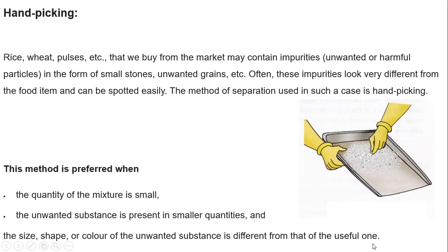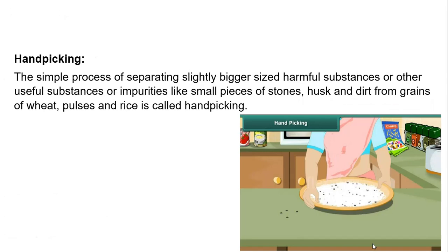And next, when the size, shape, and color of the stone or unwanted grain is completely different from rice, wheat, or pulses. So we can define handpicking as follows: the simple process of separating slightly bigger-sized harmful substances or impurities like small pieces of stones, husk, and dirt from grains of wheat, pulses, and rice is called handpicking.